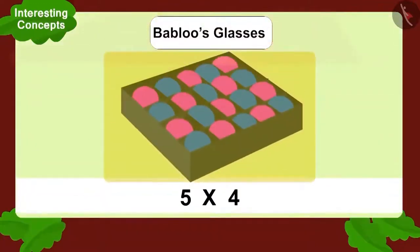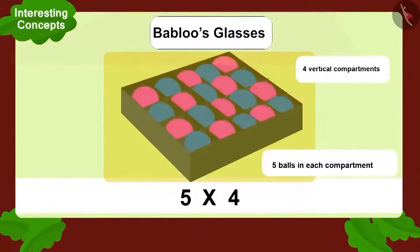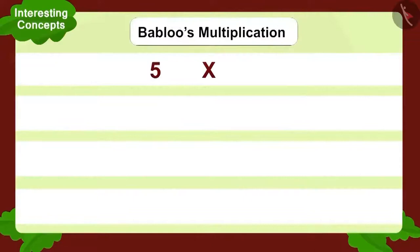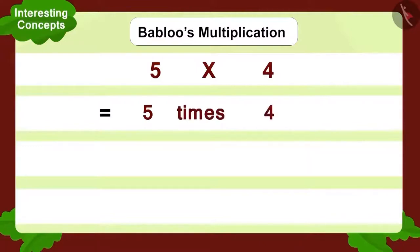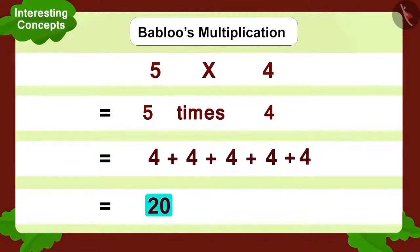Now let's look at Bablu's multiplication. Bablu saw four big compartments and five balls in each compartment — five multiplied by four. Now how can we write this? Five times four. And how to write in addition form? Adding four five times like this. So how many balls do you get? This is also twenty.